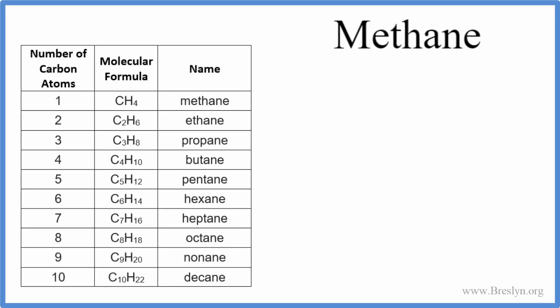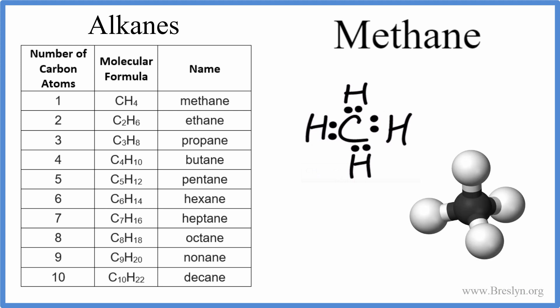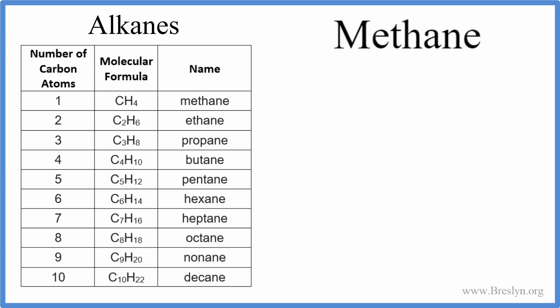The formula for methane is one of those that you really do need to know by memory. Methane is an alkane with a molecular formula of CH4. We can represent the formula as a Lewis dot structure, which shows us the distribution of atoms and electrons around the central carbon — you can see four hydrogen atoms around that central carbon. Methane has a tetrahedral molecular geometry, and the bond angles are about 109.5 degrees.